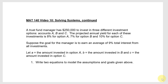The example says: a trust fund manager has $250,000 to invest in three different investment options — accounts A, B, and C. Projected annual yields for each investment are 8% for option A, 7% for option B, and 10% for option C. The goal for the manager is to earn an average 9% total interest from all these investments. Let A, B, and C represent the amounts invested in each respective option.